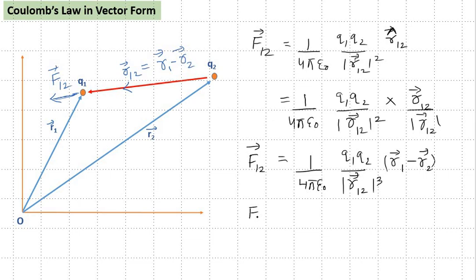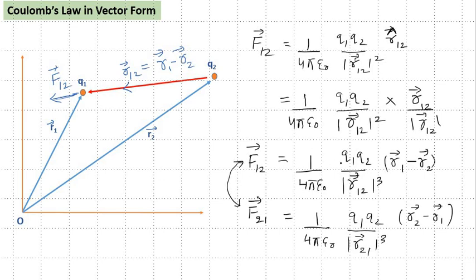If you would have noticed, F21 from the previous slide was 1 by 4 pi epsilon 0 q1 q2 remaining the same. If you write q2 q1, that is all right. And here it was r21 vector whole cube and this was r2 minus r1 vector. So vector-wise, if you see, these two forces are equal in magnitude because magnitude of r12 distance equals magnitude of r21 distance because this length remains the same. Just the arrow shows the direction, but vector-wise r12 is negative of r21 or either way around—r21 equals negative r12.